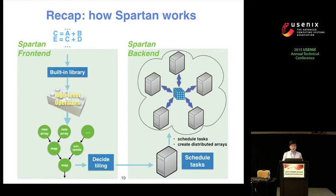In summary, Spartan's programs and built-in library functions are constituted by high-level operators. Given a program, Spartan turns it into an expression graph where each node is a high-level operator, then applies the tiling algorithm to find the best tiling choice. All of this forms Spartan's front-end. Spartan's back-end consists of a master machine and several worker machines. The scheduler on the master schedules distributed tasks, and workers execute these tasks to create distributed arrays.